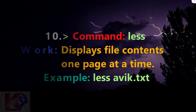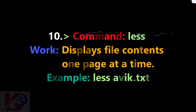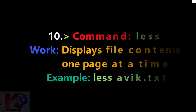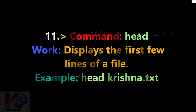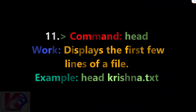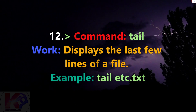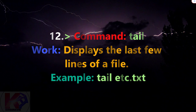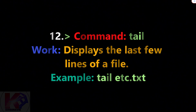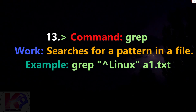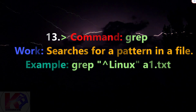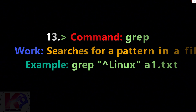Command less: displays file contents one page at a time. Example: less file_name. Command head: displays the first few lines of a file. Example: head file_name. Command tail: displays the last few lines of a file. Example: tail file_name. Command grep: searches for a pattern in a file. Example: grep pattern file_name.